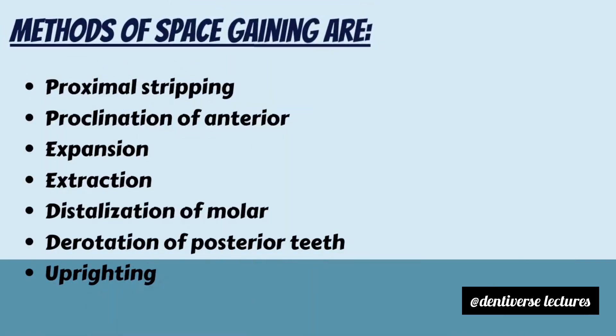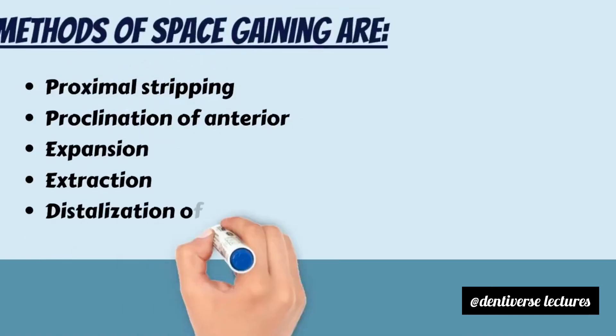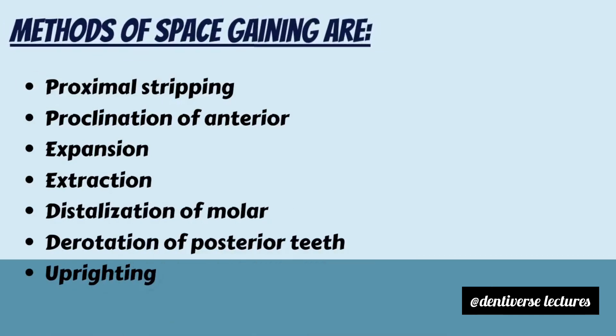Various methods of space gaining are: proximal stripping, proclination of anteriors, expansion, extraction, distalization of molar, derotation of posterior teeth, and uprighting of molars.